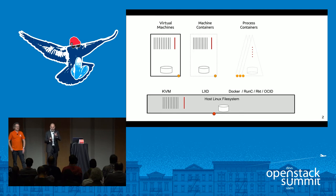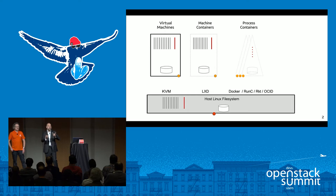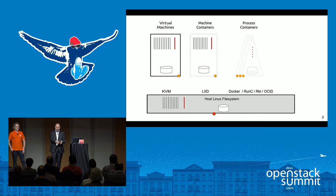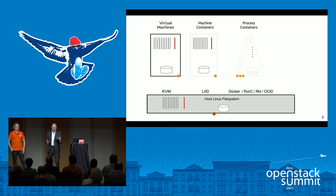Docker containers have lots of interesting properties and represent a useful new way of thinking about software, but they do require that we operate differently — if your app expects syslog, it won't find it. That's why you see a fantastic explosion of innovation around Mesos, Docker Data Center, and Kubernetes. These are essentially operating frameworks to replace the functions that OS processes used to provide. Machine containers like LXD and Docker process containers sit right next to each other, and you can run Docker inside LXD containers.